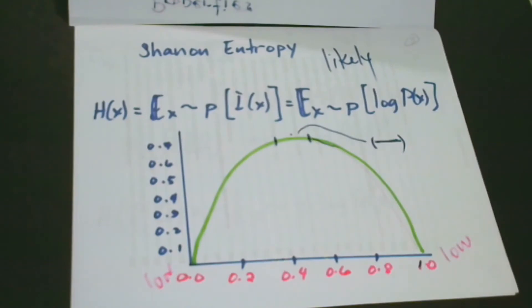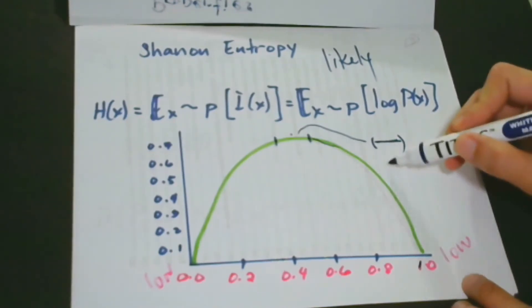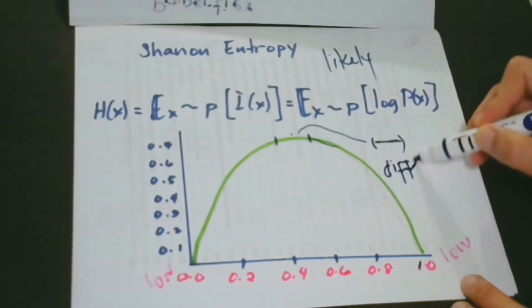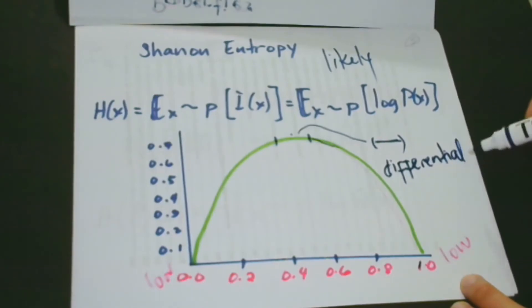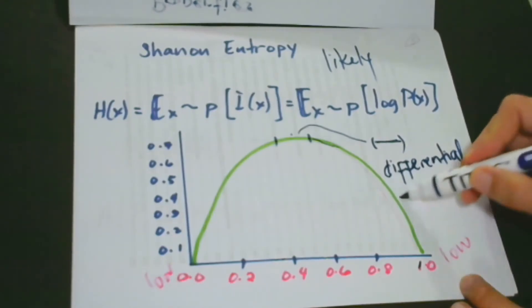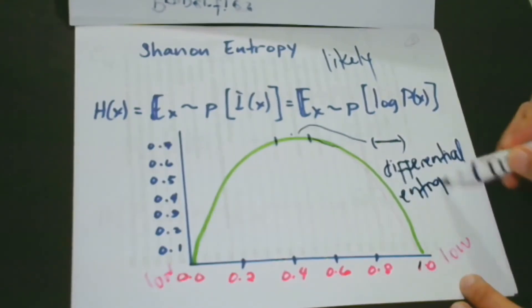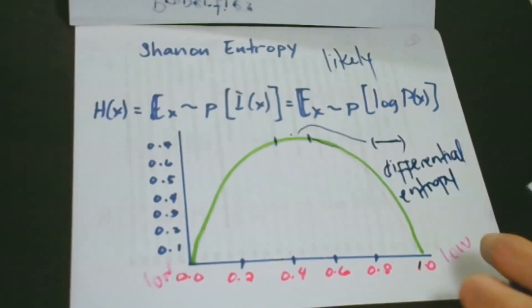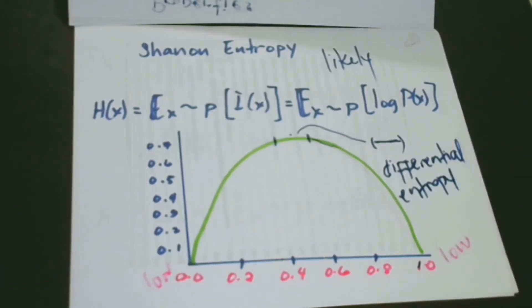So when X is a continuous variable, the Shannon entropy is known as the differential entropy. I want to write that so you could properly see. So differential entropy. Again, when X is a continuous variable, the Shannon entropy is known as the differential entropy.